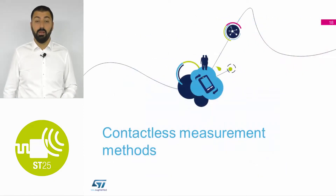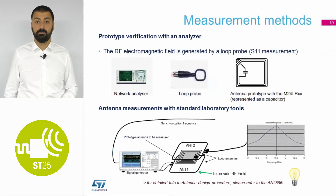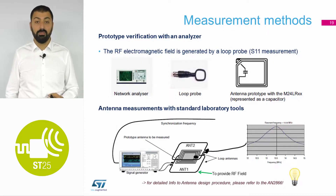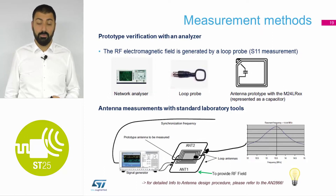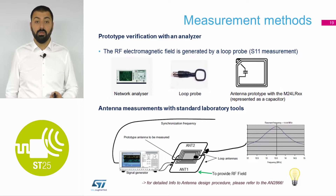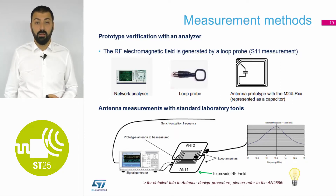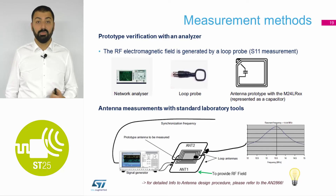Let's look at how to measure the designed NFC antenna. There are two methods. The first is to use a network analyzer, which transmits the signal and receives it again. The second method is to use laboratory tools — for example, a signal generator that transmits the RF signal, and on the receiving side a tool like a voltmeter which is able to receive the signal.